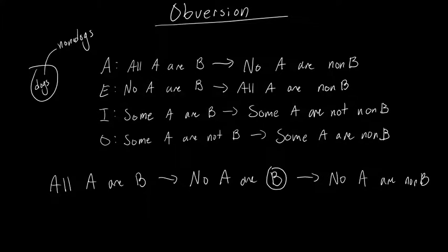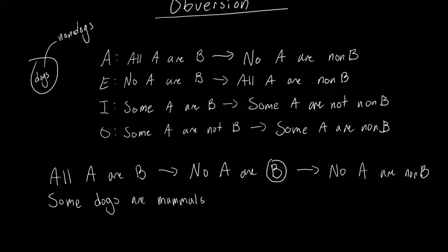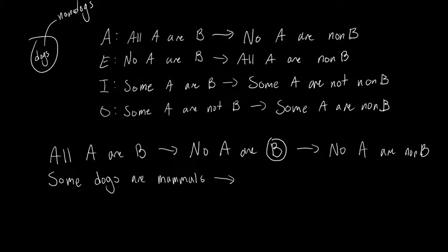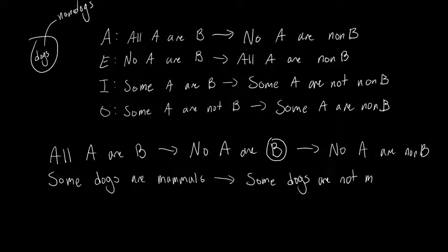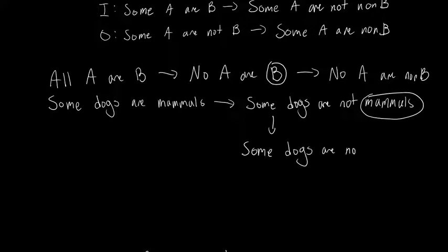And that's all there is to it. You'll do this for all of them. So let's use an I-type statement with some words: 'some dogs are mammals.' Since this is a particular affirmative, the first step is to turn it into a negative: 'some dogs are not mammals.' And then the next step, in order to get your obverse, would be to grab the predicate and replace it with its complement: 'some dogs are not non-mammals.'